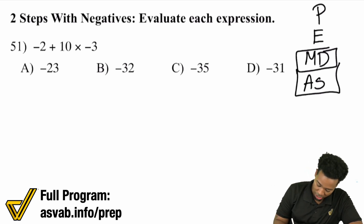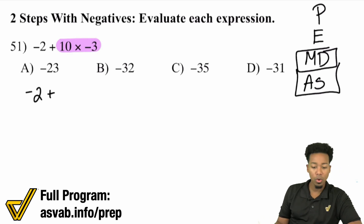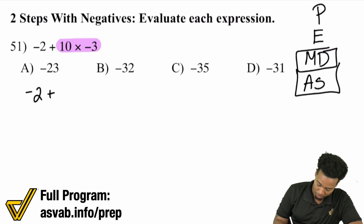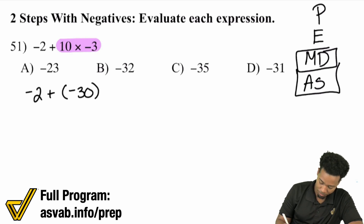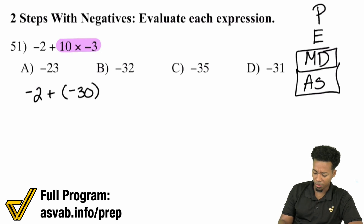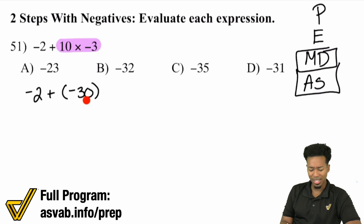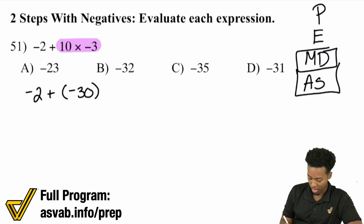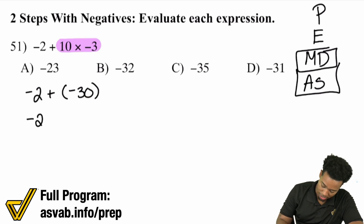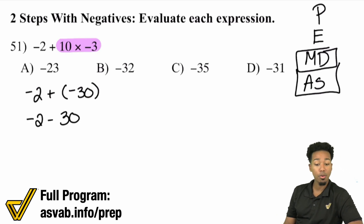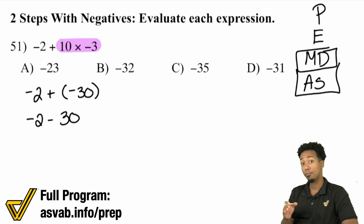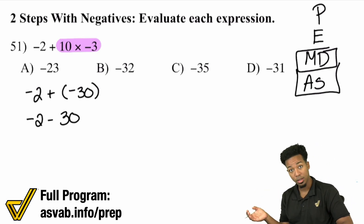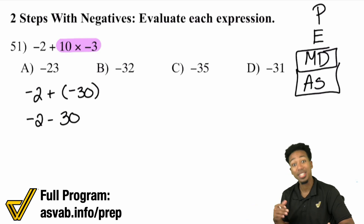We have multiplication happening first, so we'll have negative 2 plus whatever 10 times negative 3 is — and that's going to be negative 30. So we have plus negative 30. Remember, if you're adding a negative, that's the same thing as subtracting. So we can rewrite this as negative 2 minus 30. If you are already back 2 and you go back 30, well you went back 32 — negative 32.